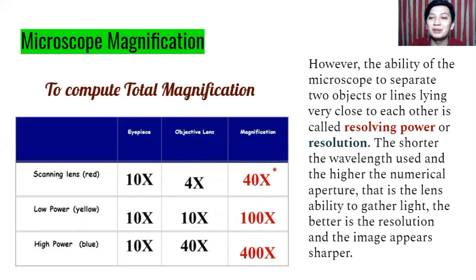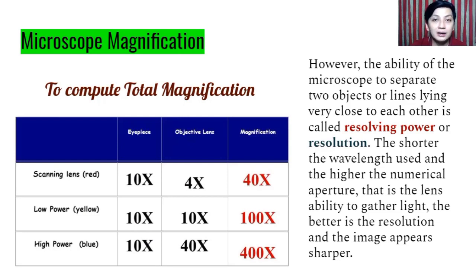The ability of the microscope to separate two objects or lines lying very close to each other is called resolving power or resolution. The shorter the wavelength used and the higher the numerical aperture — that is, the lens's ability to gather light — the better the resolution, and the image appears sharper. The more light you capture, the sharper the specimen parts you will see.